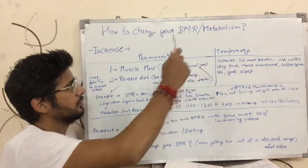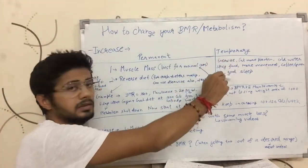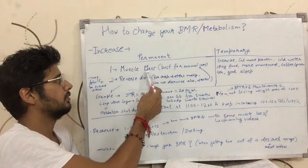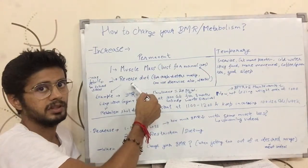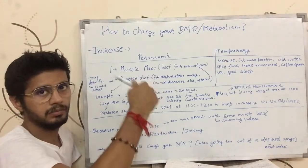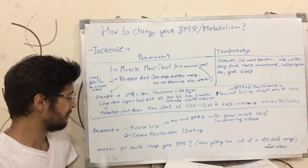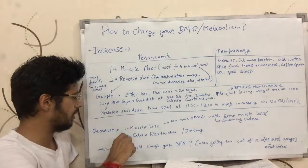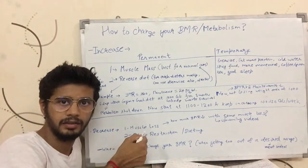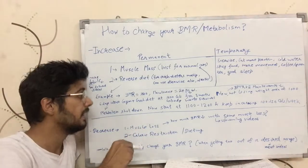So those were temporary methods of increasing the BMR. If you stop doing these methods, your BMR comes back to what it used to be. Your muscle, on the other hand, is going to stay with you — that is a permanent gain. You can also decrease your BMR by losing muscle, but who wants to lose muscle? Muscle makes you look good and makes you strong.